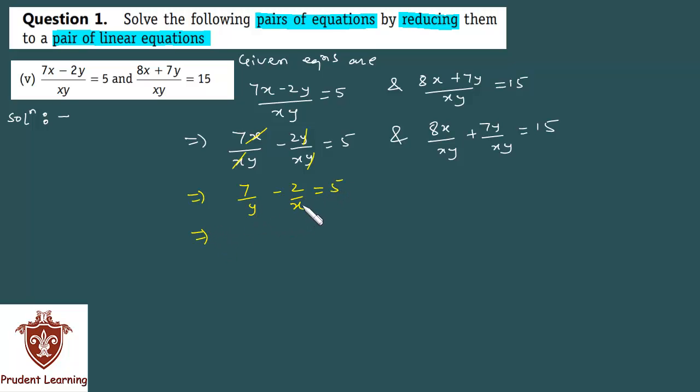You get 7 over y minus 2 upon x is equal to 5. And if you want to write the x term first, you can write it as minus 2 over x plus 7 upon y is equal to 5. This gives us the first equation.